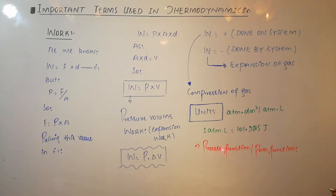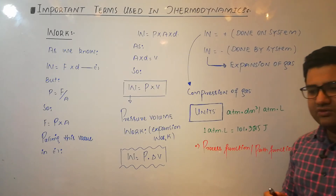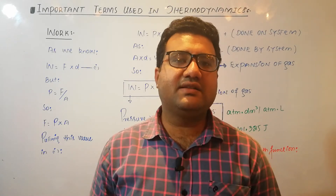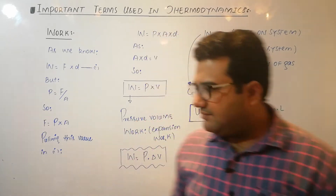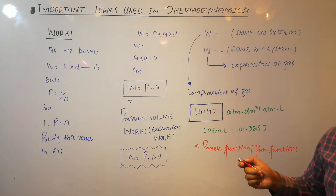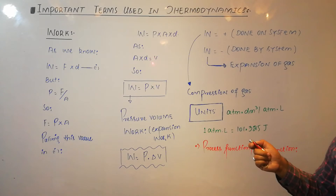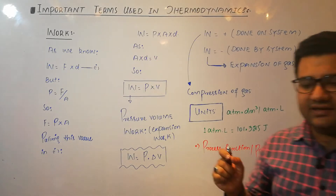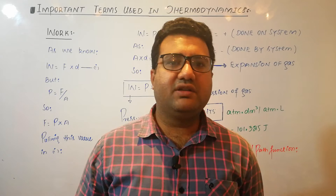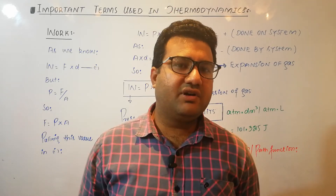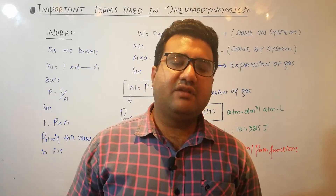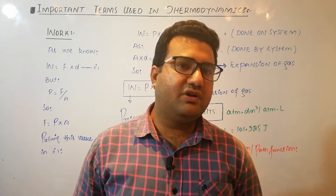Work is a process function or path function — not a state function. It does not only depend on the state of the system, but also on how that state is achieved. The reason is that work involves distance, and distance always depends on the path followed. So work is a path function.